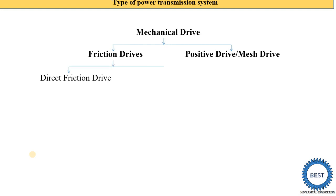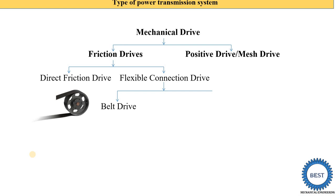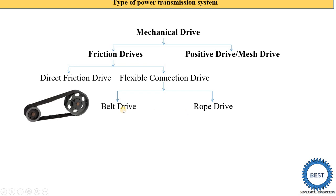In a friction drive we have two types: one is called direct friction drive, and the second one is the flexible connection drive. In a flexible connection drive, one option is the belt drive. Here you see shaft one and shaft two, and we need to transmit power from shaft one to shaft two. On each shaft we mount a pulley, and these two pulleys are connected by using a belt — that's why its name is the belt drive. If instead of a belt we use a rope, it is called rope drive.